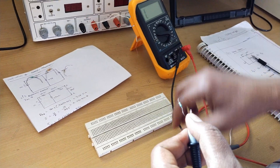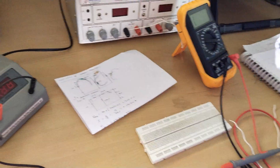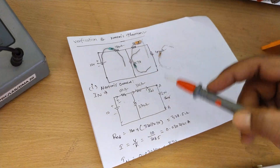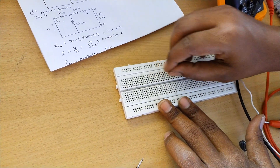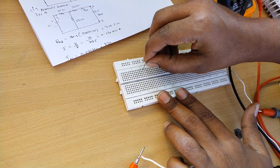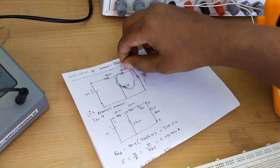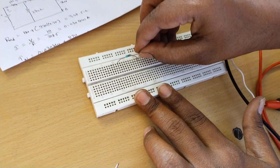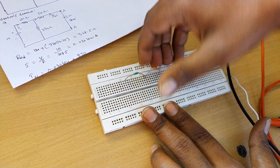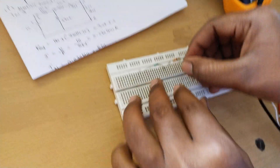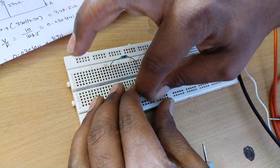This is 270 ohm. According to our circuit, we are connecting on the breadboard. This is 180 ohm, this is 330 ohm, this is 270 ohm connected to ground.